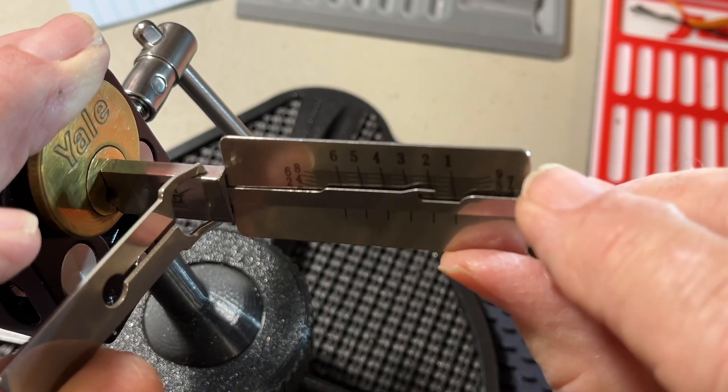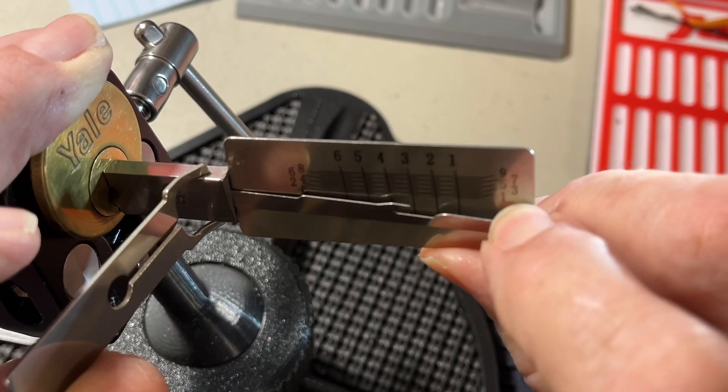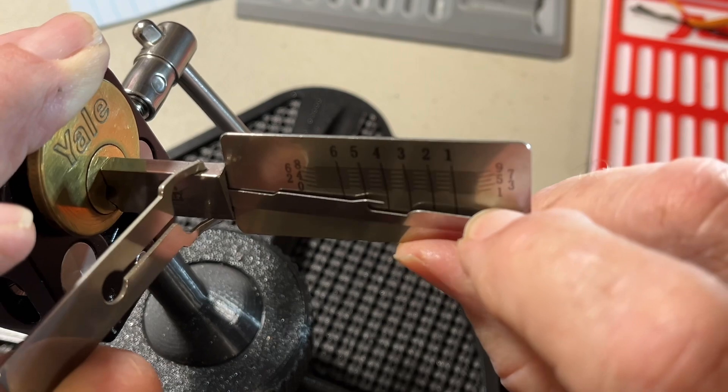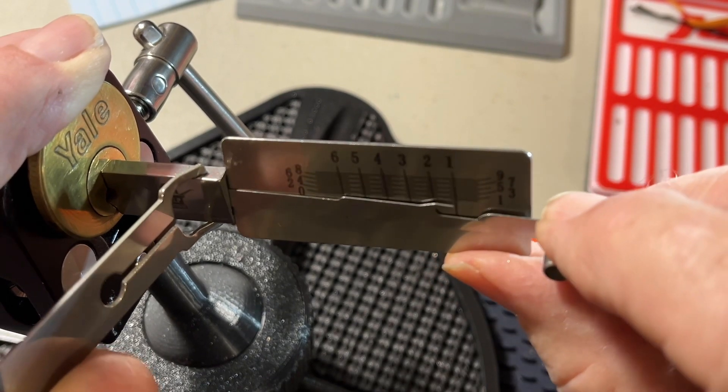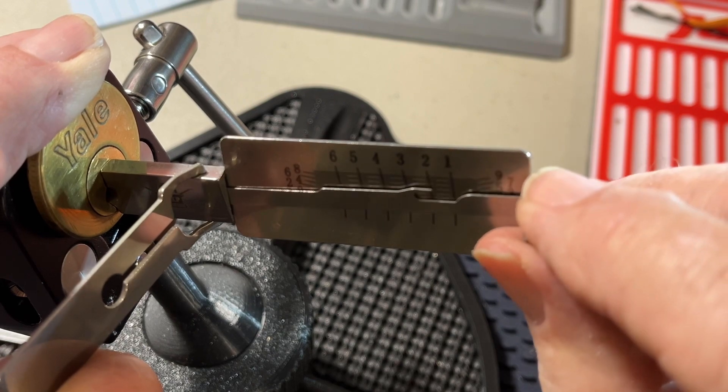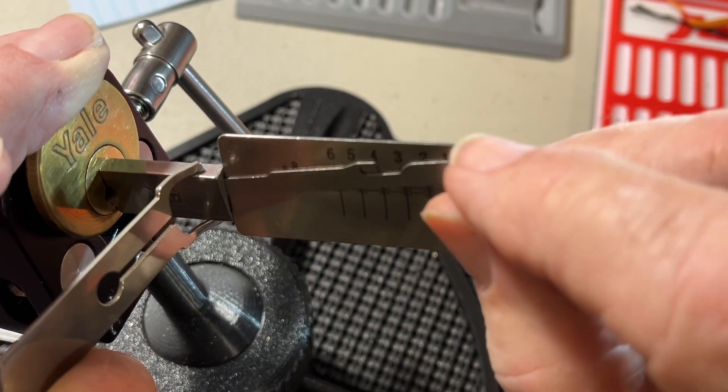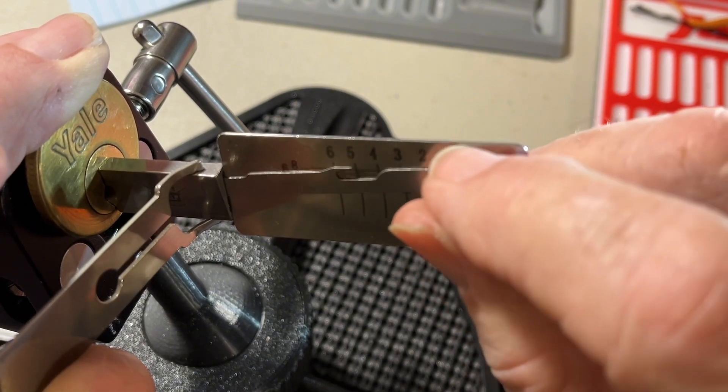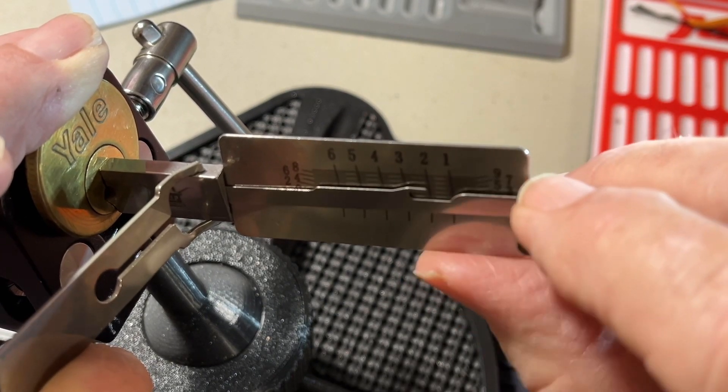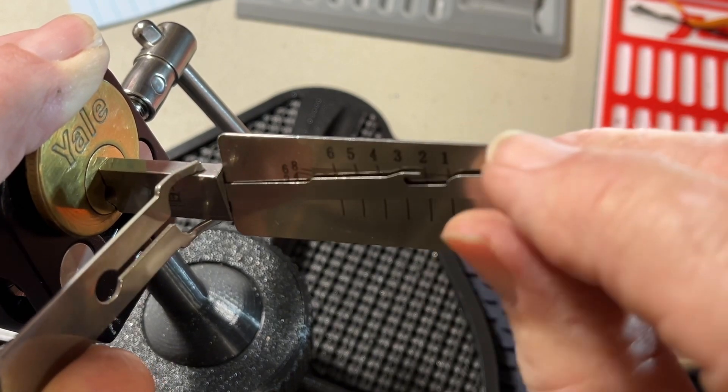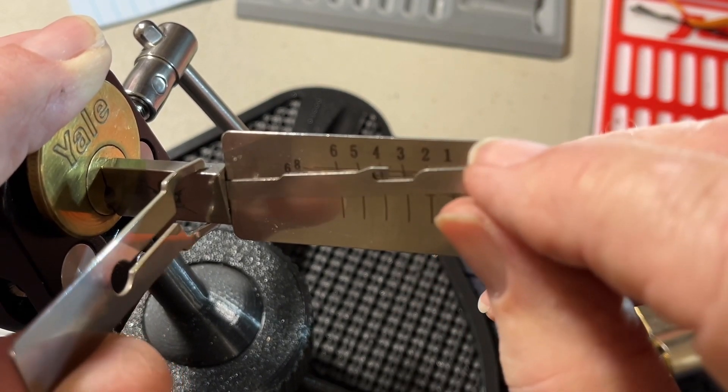Checking pins again. Nothing on 1 or 2. Moving to 3, then 4 - I can feel the core movement on 4. Click on 1, nothing on 3, click on 4, nothing on 5. Pin 2 is kind of funky. Oops, that was a big false set there.